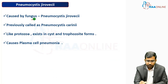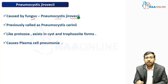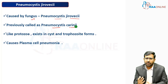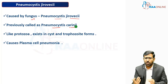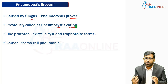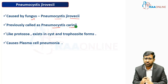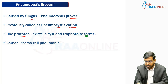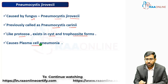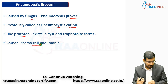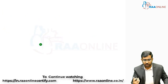Moving to the theoretical background: this organism is a fungus caused by the fungal pathogen Pneumocystis jirovecii, previously called Pneumocystis carinii. It was once thought to be a parasite because it exists as trophocyte and cyst forms, similar to protozoa. However, due to the presence of chitin and its genetic material, it is classified as a fungal organism. Like protozoa, it exists in cyst and trophocyte forms, and it causes something called plasma cell pneumonia, which we will study in detail when we look at the pathogenesis.